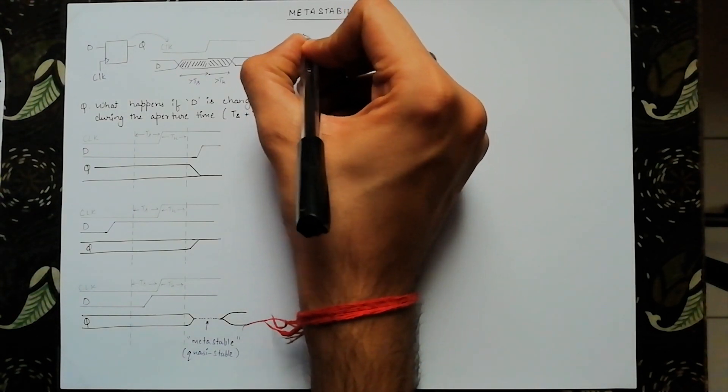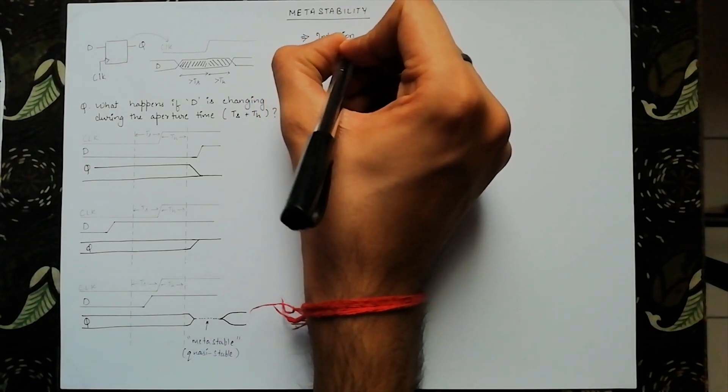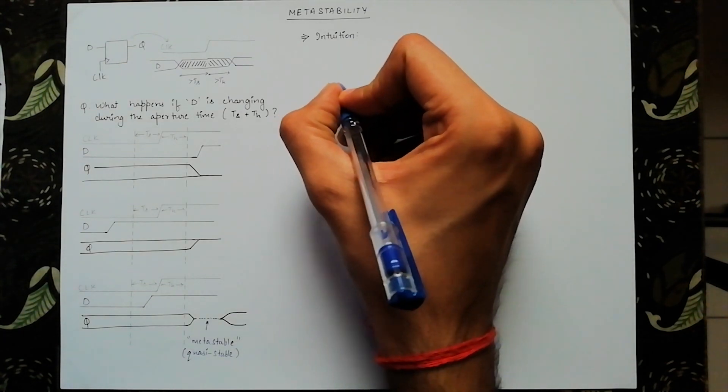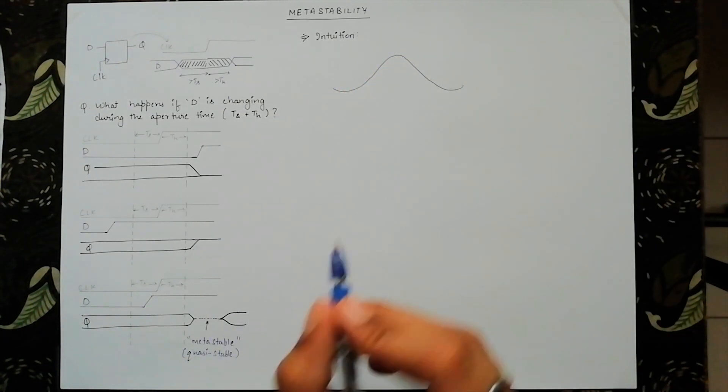Moving further, let's get some intuition about what a metastable state is through a common analogy. Consider a hill on a golf course.